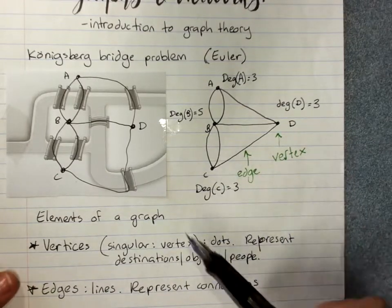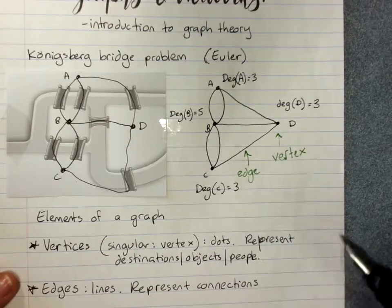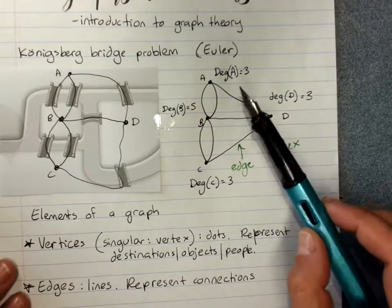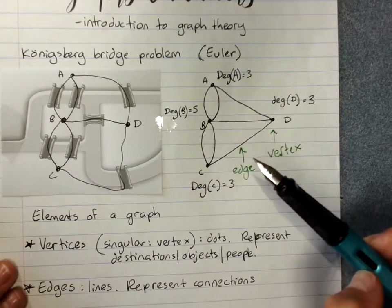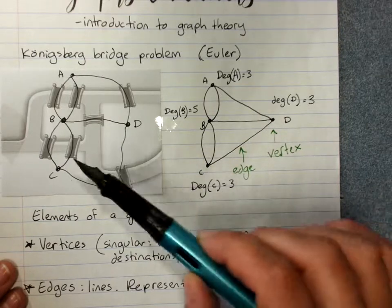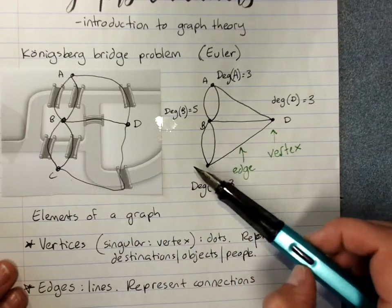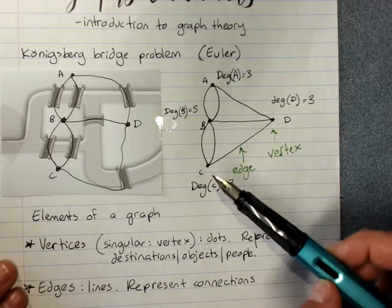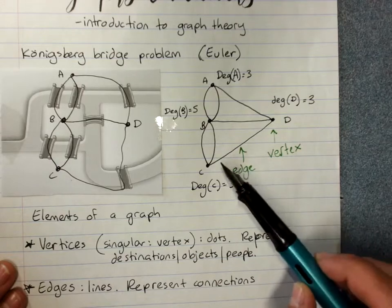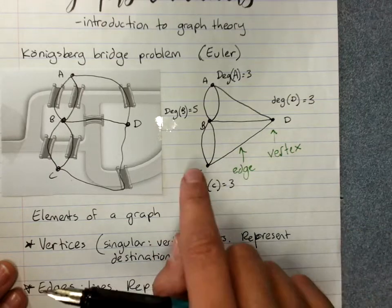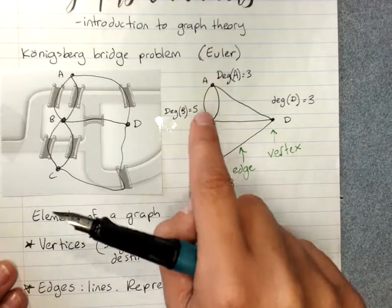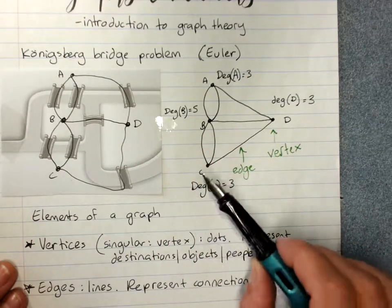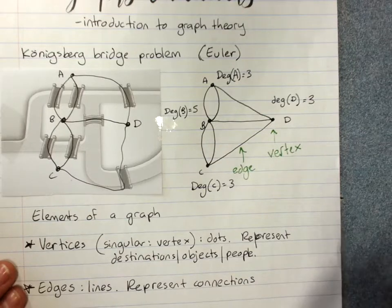Now what Euler discovered, and was able to prove more importantly, was that if you've got a graph with more than two odd vertices, you won't be able to trace a path where you go across every edge once and once only. So basically, the only way you can have a graph where you can walk every edge once and once only is if it has zero, one, or two odd vertices. Any more than that, you won't be able to do it.